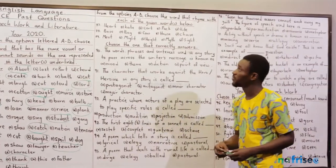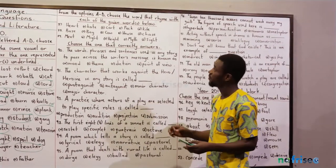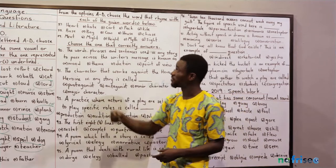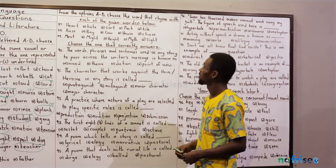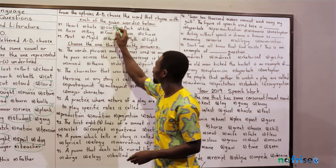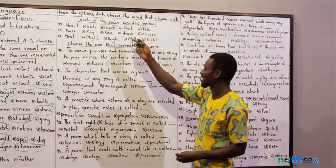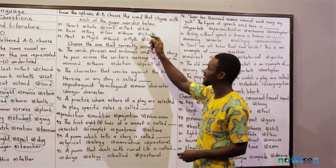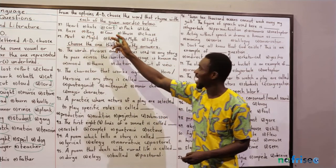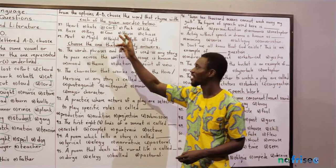The next section: we have to pick from the options A to D the word that rhymes with each of the given words. Question 87 — 'heart.' Which one actually has the same rhyme? That's 'cart.' Option B, 'Kate,' has the /eɪ/ sound. Option C, 'pike,' has the /aɪ/ sound. Option D, 'kite,' is also /aɪ/. 'Cart' shares the long /ɑːt/ sound with 'heart.'